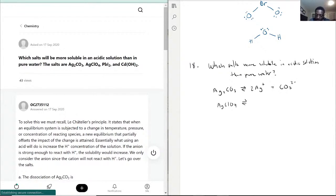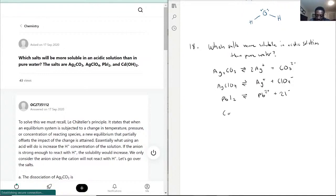That would be Ag⁺ plus ClO₄⁻. PbI₂ would be Pb²⁺ plus 2I⁻. And for the last one, Cd(OH)₂ will turn into Cd²⁺ plus 2OH⁻. So that's each one.